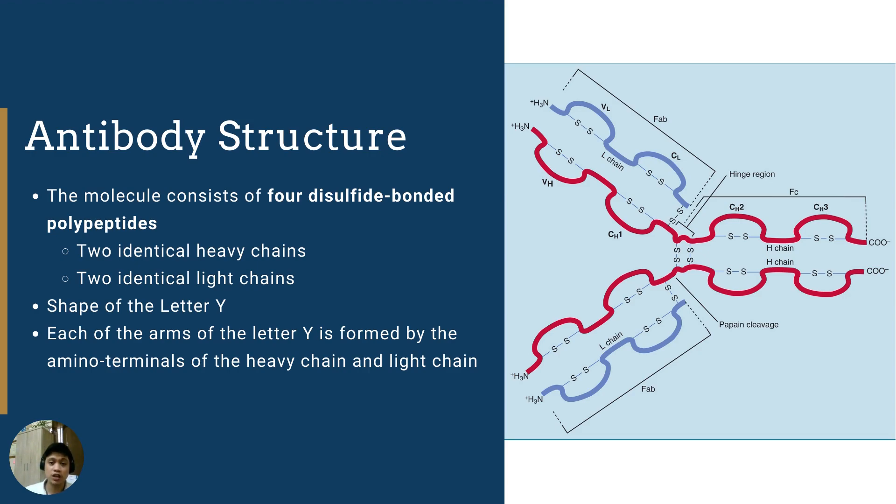As you will observe in the image, the arms of the antibody consists of the amino terminal, which means for that very long polypeptide, the N or the amino end is oriented to the arm of the antibody. And this amino terminal confers the specificity and the ability of this antibody to bind and neutralize antigens.